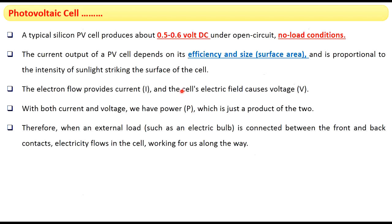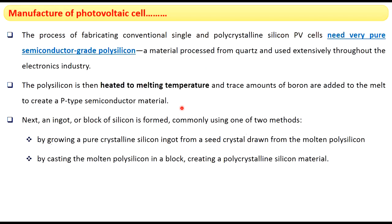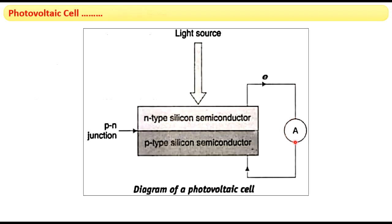The voltage is provided by the electrical field and we are getting both current and voltage. The combination of these two is power. When we apply an external load, we will be getting power continuously as long as the sunlight strikes the photovoltaic cell. This is how a photovoltaic cell works.